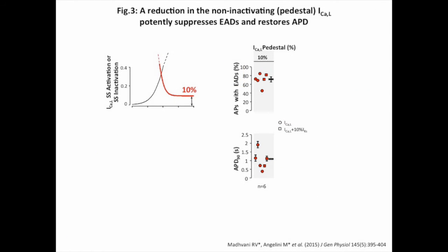Our finding that reducing the L-type calcium current non-inactivating pedestal current is highly effective at suppressing hydrogen peroxide-induced EADs is summarized in Figure 3. The zoomed-in area of the L-type calcium channel activation and inactivation curves is shown to clearly demonstrate the pedestal-reducing maneuver. Upon pedestal reduction from 10% to 4%, EADs were completely prevented. Moreover, the action potential duration was fully restored. Each data point represents an individual cell. The black lines in each plot represent the mean of all experiments.